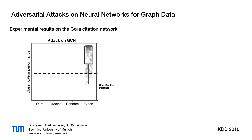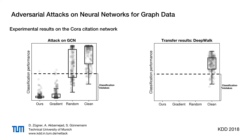Let's have a look at some results of our attack strategy on the Cora Citation dataset. On the left, we see the results of training a graph convolutional network on the modified or clean data. We see that our method outperforms both random selection of perturbation and gradient-based selection and leads to a dramatic degradation of classification performance. On the right, we have the results of training a completely different model on the modified data. Again, our model outperforms the two baselines and leads to a strong decrease in performance.